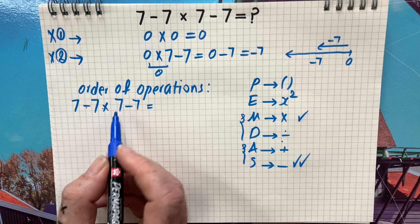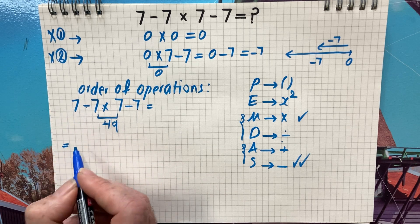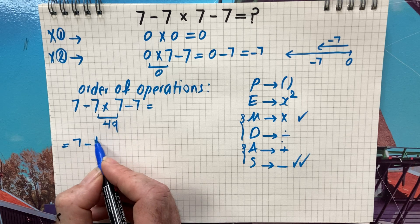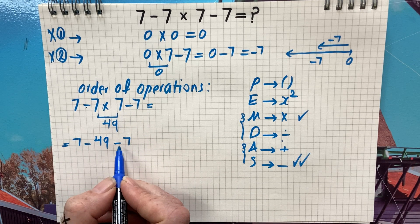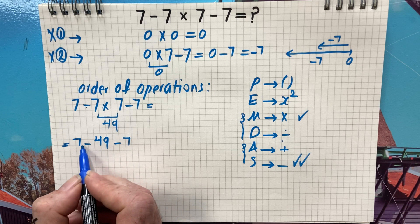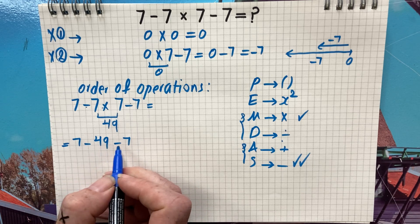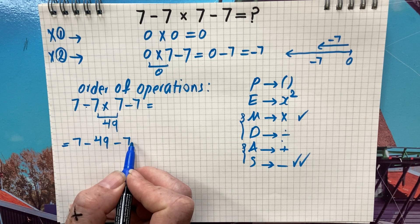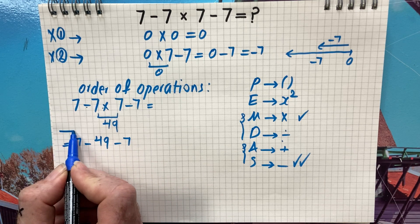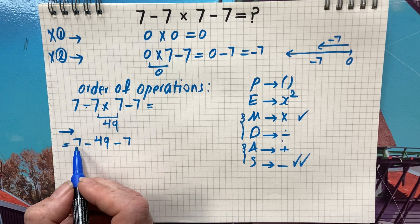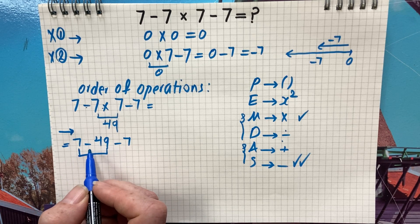Multiplication first: seven times seven is 49. So we rewrite it as seven minus 49 minus seven. Now we have two subtractions. When we have the same operations, we start from left and go to the right — so first we do seven minus 49.